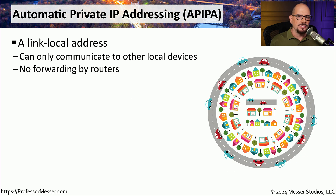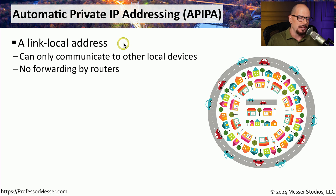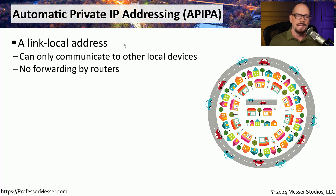If you've ever connected to a network that does not have a DHCP server, you may notice that you're still assigned an automatic address — but this address is not quite as capable as a DHCP address. Instead, it's what we call a link-local address, because it can only communicate to other devices on your local subnet and cannot be routed outside of it. In IP version 4, this link-local address is assigned through a process known as Automatic Private IP Addressing, or APIPA.